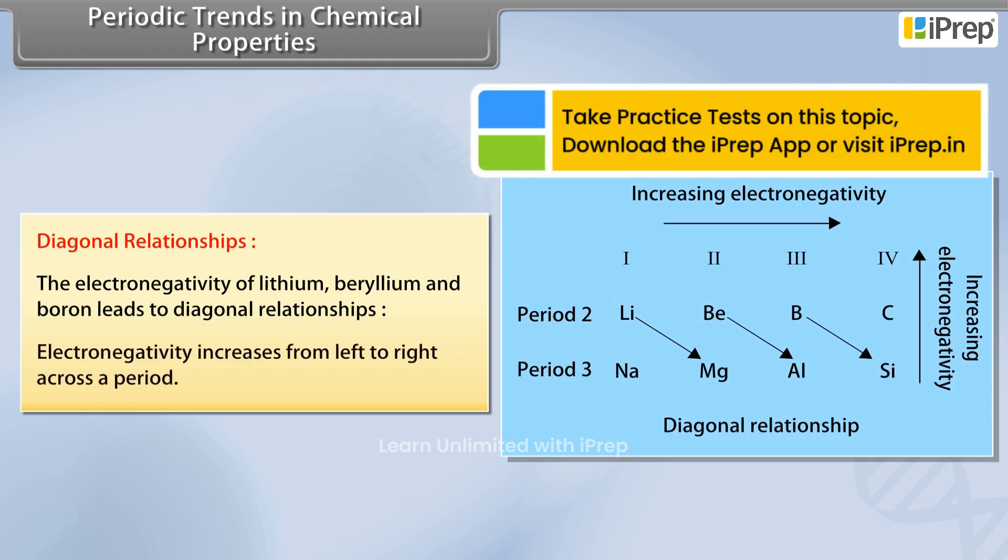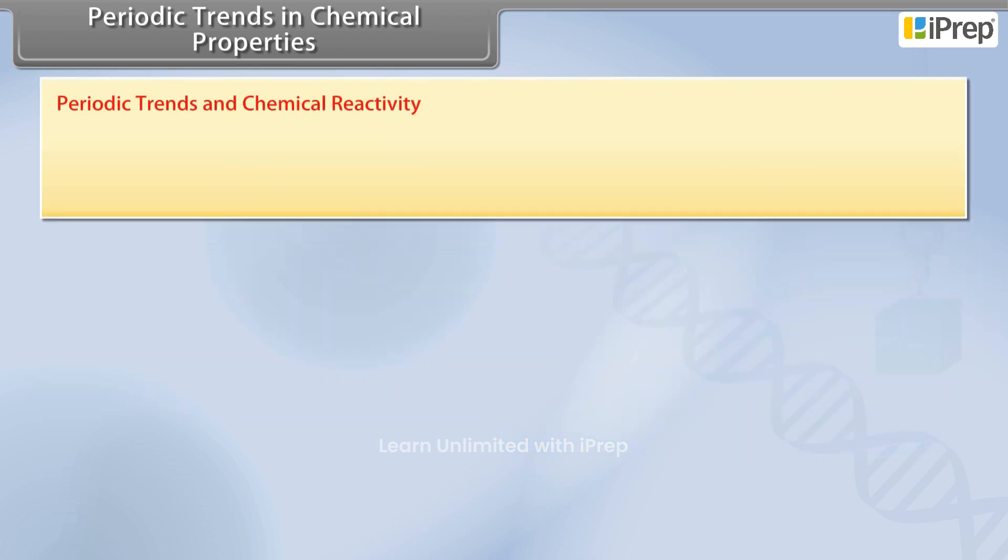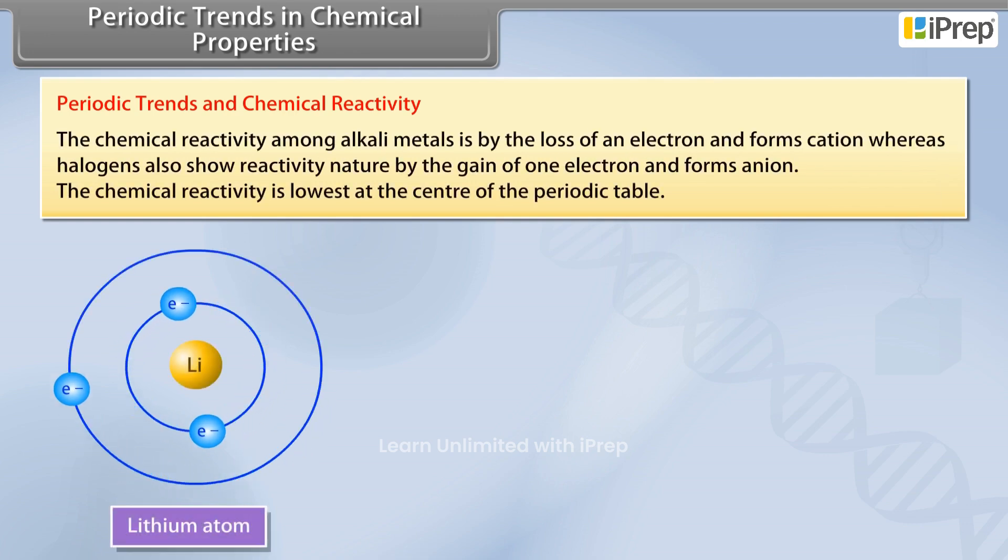Electronegativity increases from left to right across a period. Periodic Trends and Chemical Reactivity. The chemical reactivity among alkali metals is by the loss of an electron and forms cation.